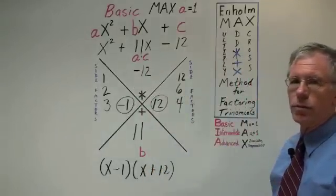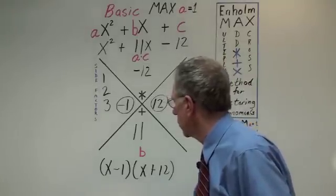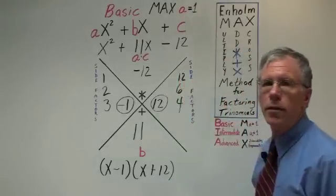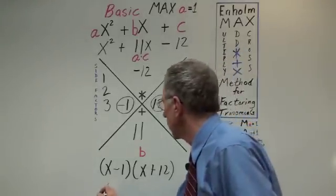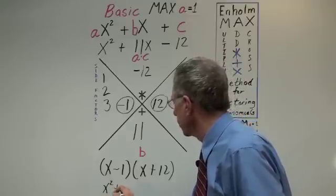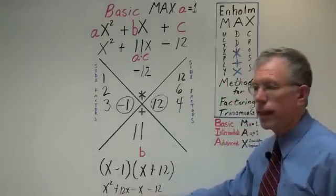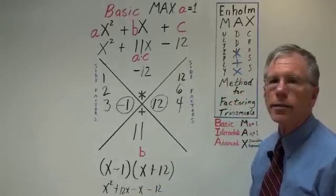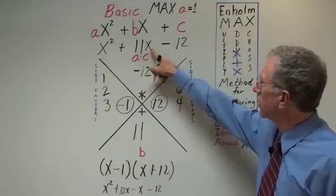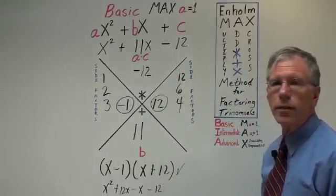Again, let's use FOIL just to make sure that we haven't missed something here. FOIL gives us first x squared, then positive 12x, negative x minus 12. Well, again, 12x minus x gives us 11x. And we have our negative 12. We've checked it. It's correct.